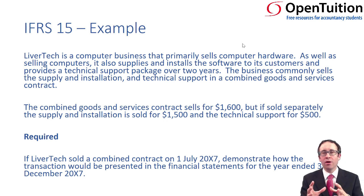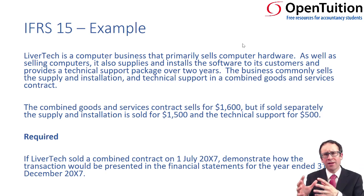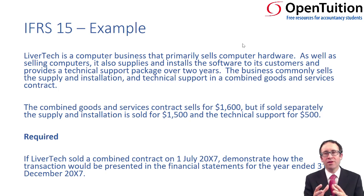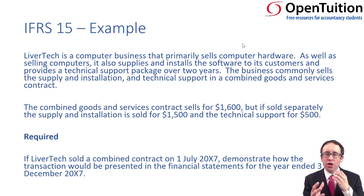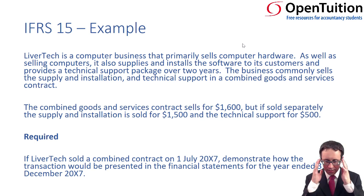It's another example of the allocation of a transaction price to the goods and the services. But here, what we're going to do is take it a little bit further in step five by actually recognising the debits and credits and showing how things are presented within the financial statements. So, we're really ratcheting it up towards the end.